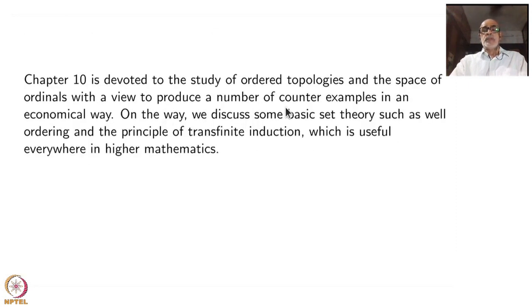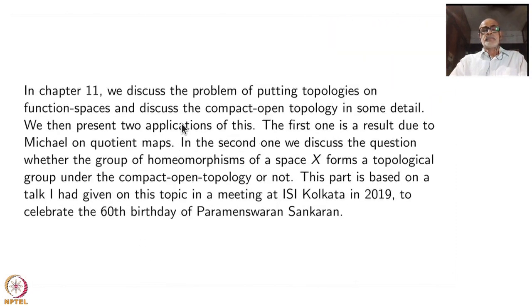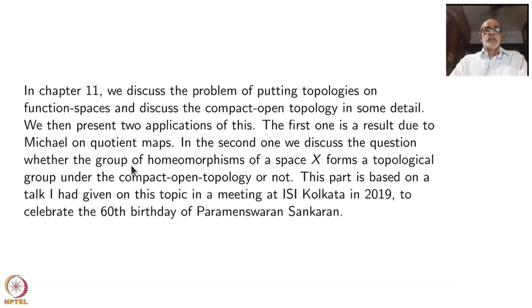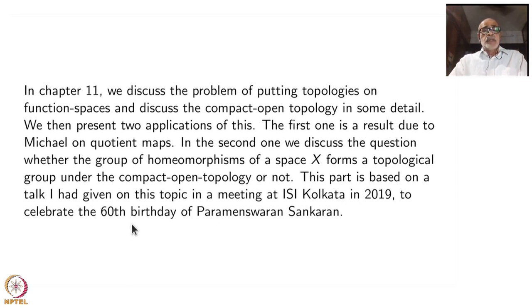After recalling set theory, we go to order topology, motivated by introducing interesting counterexamples. In Chapter 11, we discuss the problem of putting topologies on function spaces and discuss the compact-open topology in some detail, then present two applications. The first is a result due to Michael on quotient maps. The second discusses whether the group of homeomorphisms of a space forms a topological group under the compact-open topology. This part is based on a talk I gave at a meeting at ISI Kolkata in 2019, to celebrate the 60th birthday of our close friend Parameswaran Sankaran from IMSC.